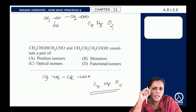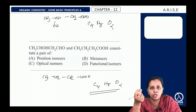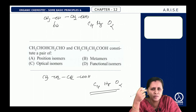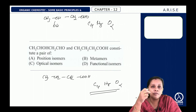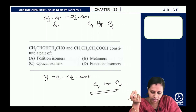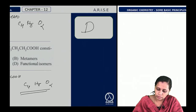Position isomers have the same molecular formula, same functional group, but differ in the position of the functional group. Metamers differ in chain lengths on either side of the functional group. Optical isomers differ in rotation of plane polarized light. The answer here is option D, functional isomers.